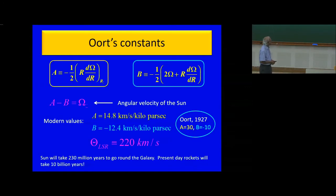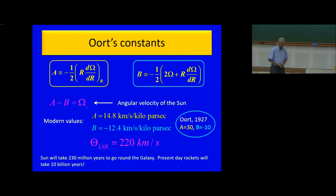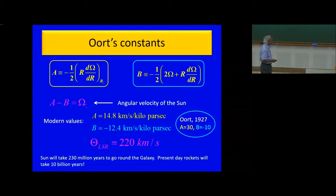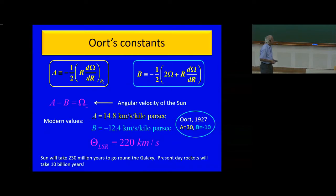If I subtract B from A, I get for the orbital velocity of the Sun around the center of the galaxy 220 km/s. We are going around the Sun with a velocity of 30 km/s, and the solar system is going around the center of the galaxy at 220 km/s. Just to give you an idea of how big our galaxy is: using the best rockets we have today, it would take 10 billion years to go around the center of the galaxy. The Sun will go around the center of the galaxy in about 230–250 million years.